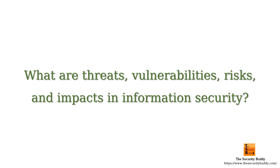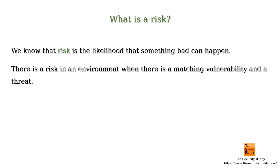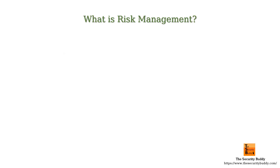In our previous video, we discussed threats, vulnerabilities, risks, and impacts in information security. We know that risk is the likelihood that something bad can happen. There is a risk in an environment when there is a matching vulnerability and a threat. For example, if a malware program can exploit a software vulnerability to infect a system and a system running that software has that vulnerability, we say that the malware program is a risk to the computer system.